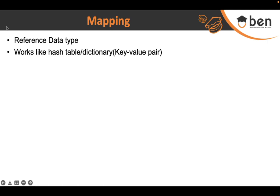A course can have multiple details as we discussed in the last lesson. For example: the number of students enrolled for a particular course, the name of the course, whether it's a free course or a paid course, the fees if it is paid, the number of lessons, the number of quizzes, and the number of assignments associated with the course.